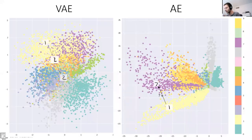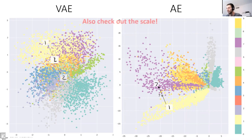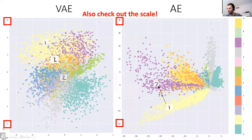Due to this encouragement of the latent space, if we visualize the VAE latent space, the images are much more compact. The scales are from minus three to three, as opposed to minus fifteen to twenty-five in a regular autoencoder, and most of them are compact and surrounding the zero mean as we would want.